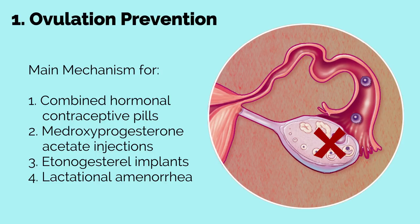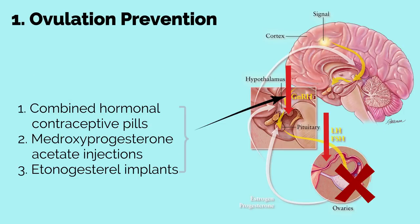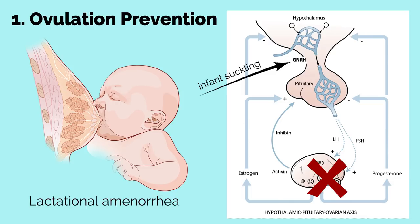Ovulation prevention is the main mechanism for combined hormonal contraceptive pills, medroxyprogesterone acetate injections, levonorgestrel IUD, etonogestrel implants, and lactational amenorrhea. Exogenous progestin and estrogen suppress GnRH release from the hypothalamus, which decreases LH and FSH release from the pituitary, resulting in no stimulation of ovarian follicle development. In combined estrogen and progestin contraception, the progestin component is most important for ovulation suppression. Lactational amenorrhea occurs when infant suckling interrupts GnRH secretion, resulting in decreased LH and FSH release and a lack of ovarian follicle development.